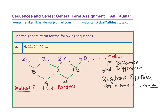Find factors — that means write each number as a product of two numbers. So we need to split this particular sequence and write each term as a product of two numbers. This is term number one, term number two, term number three, and term number four. Now, 12 could be written as 4 times 3. This is 6 times 4. And that is 8 times 5.